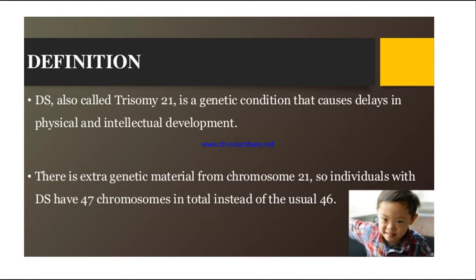There is an extra genetic material from chromosome 21. Individuals with Down syndrome will have 47 chromosomes in total instead of the usual 46. In a normal person, there are 46 chromosomes and 23 pairs. But in Down syndrome, there is an extra genetic material in chromosome number 21, making the total number 47. That is why we call it Trisomy 21.